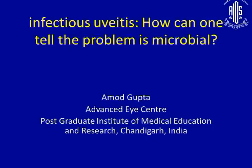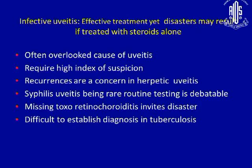If we treat infectious uveitis agents with steroids alone, as many of us have a tendency to do, it requires a high index of suspicion. The basic idea is to recognize these infections as they occur in the anterior segment or in the posterior segment.